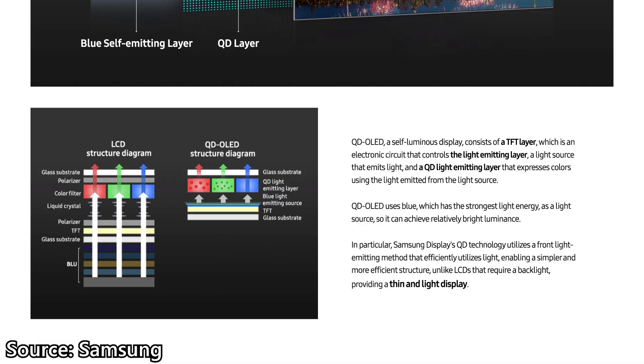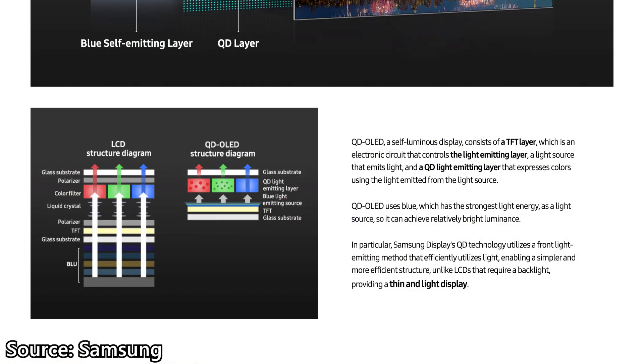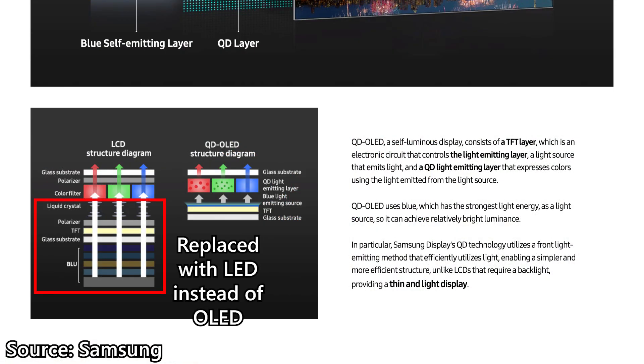To eliminate the use of a backlight entirely, there is another technology called QD-OLED. It essentially replaces the backlight with an OLED layer, combining the best of both worlds — you get OLED's fantastic contrast ratio and super deep black levels, while QLED contributes vibrant colors and better brightness. But since it uses an OLED backlight, it will eventually burn in. It is just inevitable. And this is where Samsung's latest QD-LED comes into play — it's the same concept as QD-OLED, but without the organic part. Hence, it won't have any burn-in issues.